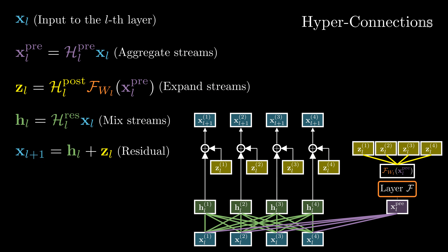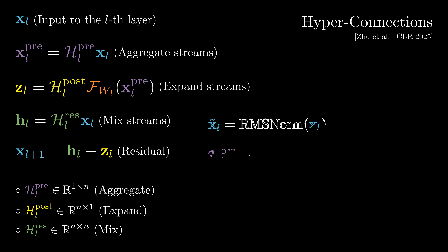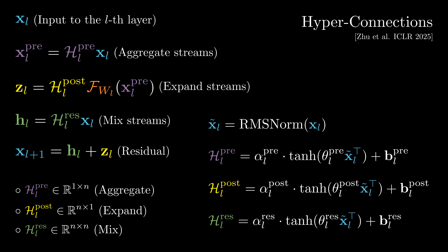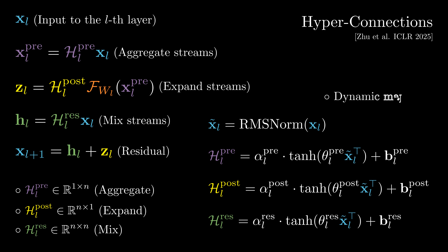This is called hyperconnections, a paper proposed by Backdance earlier in 2025. But we don't want to learn these linear mappings directly because they will not be adaptive depending on the input of the layer. Therefore, hyperconnections introduce a parametrization where the values of the linear mappings are dynamically conditioned on the input. There are two types of trainable parameters: global ones that do not depend on the input, referred to as static mappings, and input-dependent parameters, referred to as dynamic mappings.